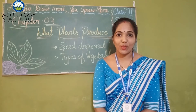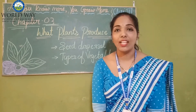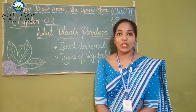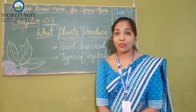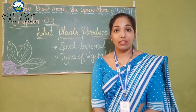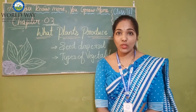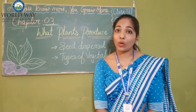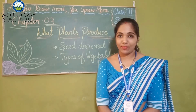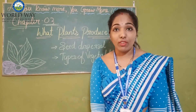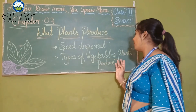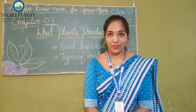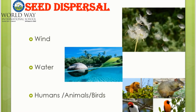Hello, my dear students! Hope you are doing well. In this video, we are going to continue the chapter on plant leaves. In the first video, we have seen parts like flowers, fruits, and seeds. We are going to continue this chapter — in this video, we will be talking about seed dispersal and the types of vegetables that plants produce.